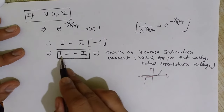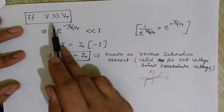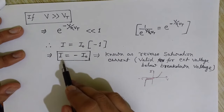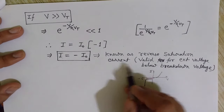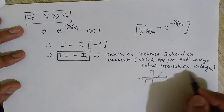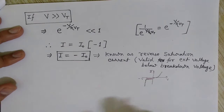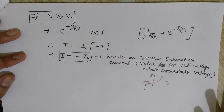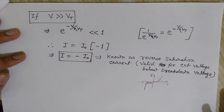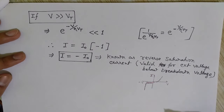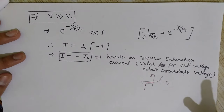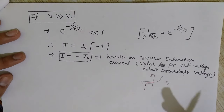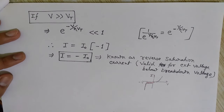This is clear from the equation: when V is much greater than VT, a constant reverse saturation current flows until we reach the breakdown voltage. I hope you understood all the concepts related to the diode current equation — the forward bias and reverse bias behavior, the ideality factor for germanium and silicon, and the equation's behavior at room temperature of 300 kelvin.